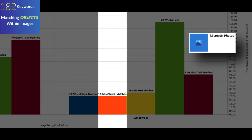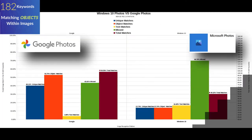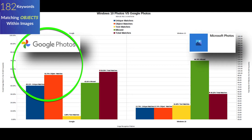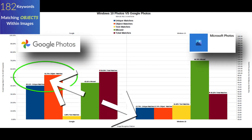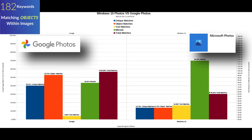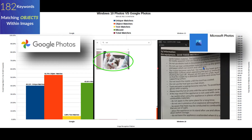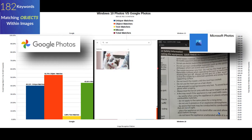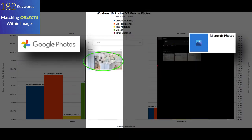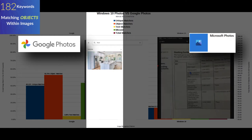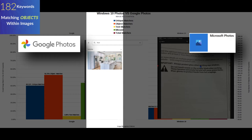Google is far superior to Windows 10 at associating keywords with objects within images. We separated searches into two categories: matching keywords to objects and matching keywords to text. Object matches are when searching 'cat' returns an image of a cat, searching 'door' returns an image of a door, or searching 'fridge' returns a picture of a kitchen with a refrigerator in it.